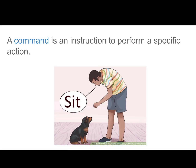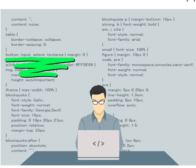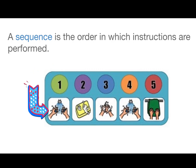A command is an instruction to perform a specific action. Check out this example: the boy is telling the dog to sit — that is a command. Developers use commands too. They command the program or game to do something. Sometimes commands work together.